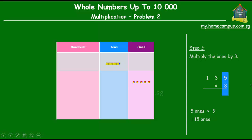In the working, 5 times 3 gives us 15. So we are left with 5 in the ones column and we carry over the 1 into the tens column. So 15 ones gives us 1 ten and 5 ones. That's the first step.